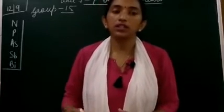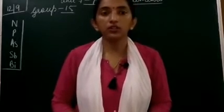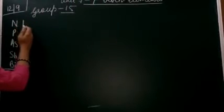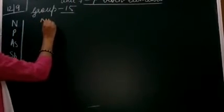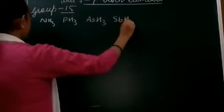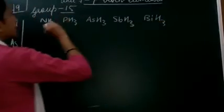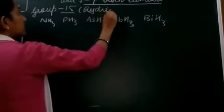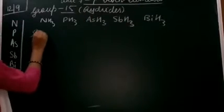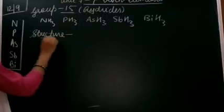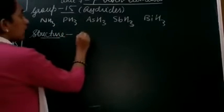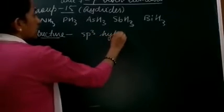Now we are beginning with the characteristics of the hydrides of group 15. In the last class we mentioned that the hydrides of group 15 are ammonia, phosphine, arsine, stibine, and bismuthane. Now first we will discuss the structure of these hydrides. The first point to be kept in mind is the hybridization — they all are sp3 hybridized.